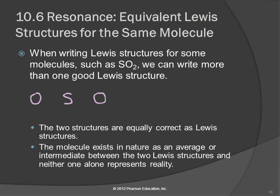How many electrons are we dealing with here? Sulfur has six valence electrons and oxygen has six, and there are two oxygens, so that's two sixes, which is 12. Together with sulfur's six, we've got 18 valence electrons.